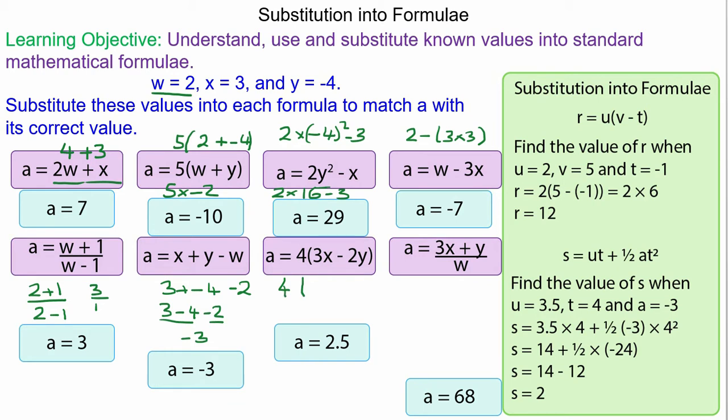4 times (3x minus 2y): 4 times (3 times 3 minus 2 times negative 4), which is 4 times (9 plus 8).